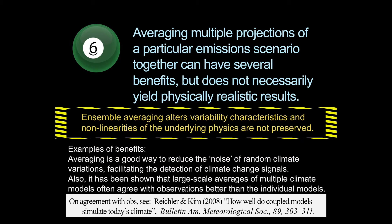Six: averaging multiple projections of a particular emission scenario together can have several benefits. If what you're interested in is a mean response and you want to beat down the noise, average together different climate models — it's been shown that the average of about 20 climate models is closer to observations than even the best individual model. The different errors are somewhat random and kind of average out. But any non-linearities of the underlying physics are going to be lost. So think about your application — what matters to you.